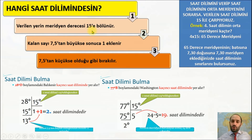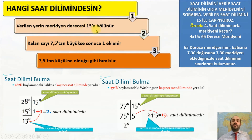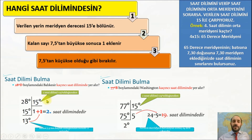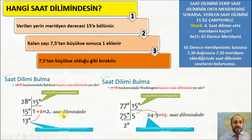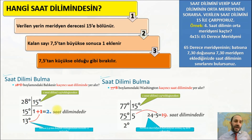Saat dilimini sorarsa ne yapacağız? Birinci adım: verilen yerin meridyen derecesi 15'e bölünür. Neden 15'e? Her 15 meridyende 1 saat değişiyordu. Kalan sayı 7.5'tan büyükse bölüm sonucuna 1 ekliyorsunuz; 7.5'tan küçükse olduğu gibi alıyorsunuz. Örnek: 28 derece doğu boylamı 15'e bölündüğünde kalan 13 olur; 13 > 7.5 olduğu için 1+1 = 2. saat dilimi. Eğer kalan 6 ya da 7 çıksaydı direkt 1. saat dilimi olarak alacaktınız.